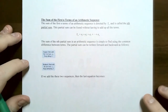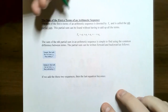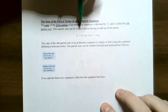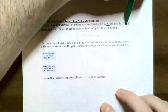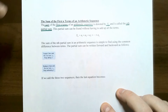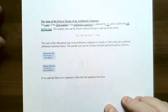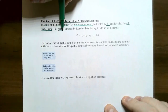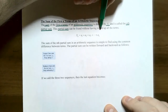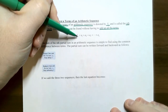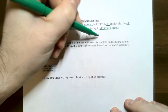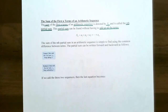We left off at the sum of the first n terms of an arithmetic sequence. This sum is denoted capital S sub n and is called the nth partial sum. Capital S stands for sum, and the subscript denotes that there are n terms that have been added together. An arithmetic sequence is one where each term is obtained by adding a common difference, d, to the previous term.